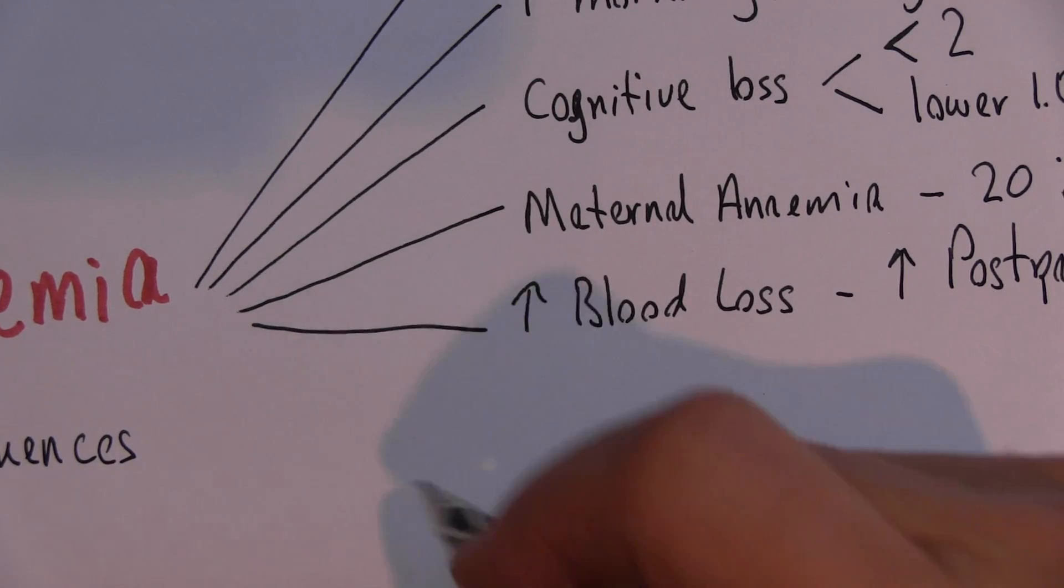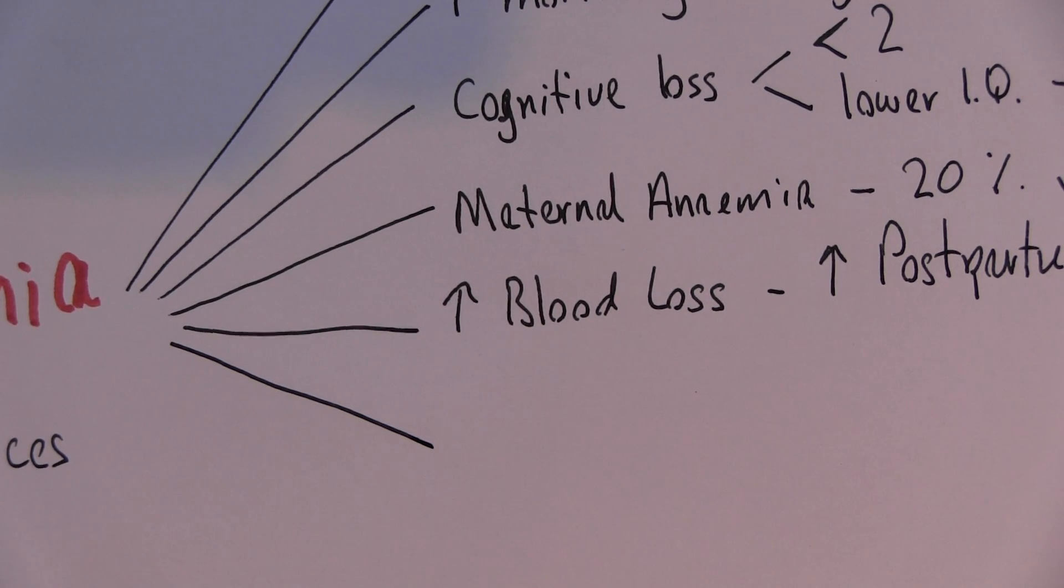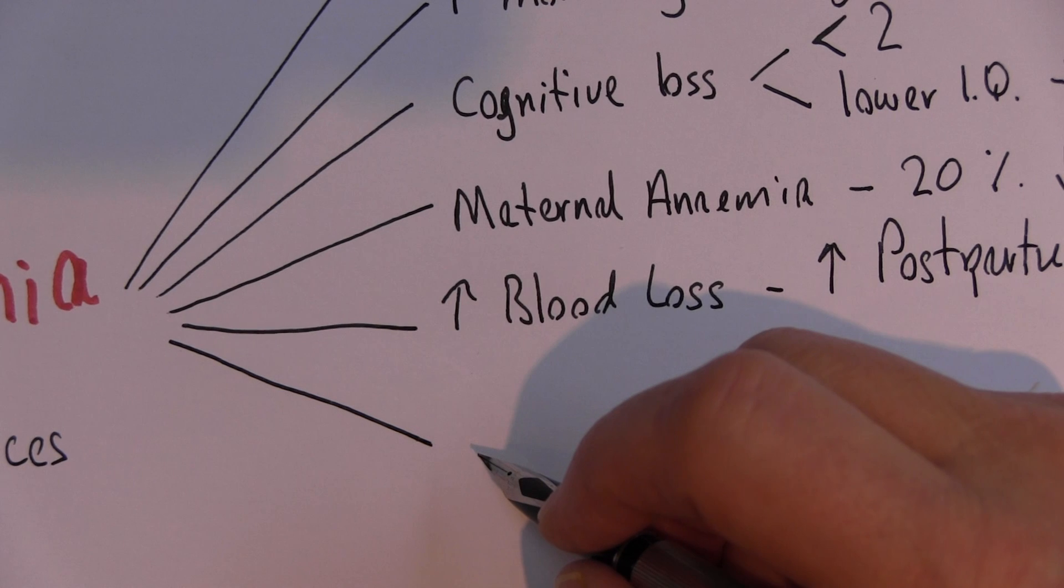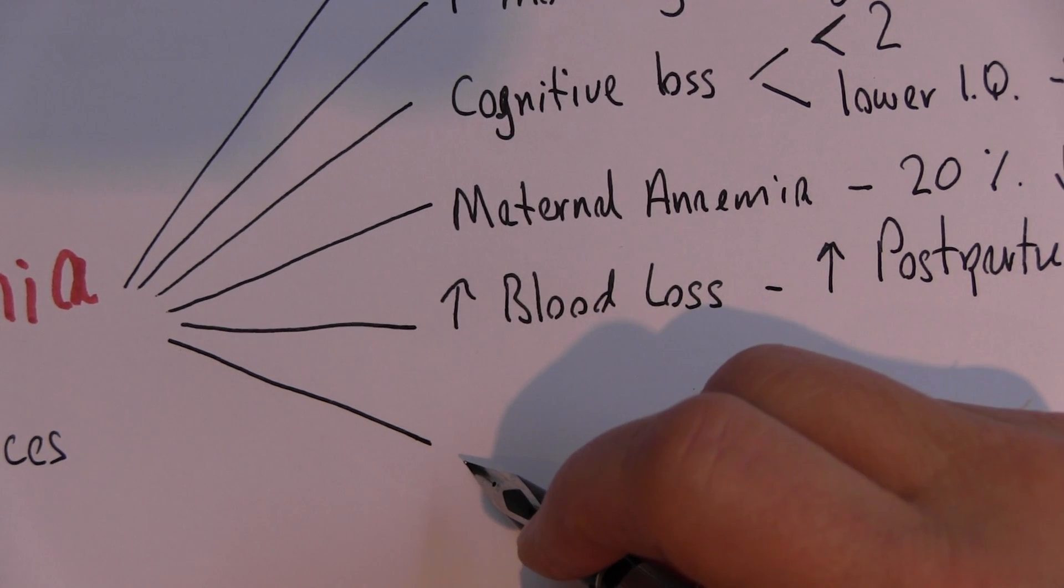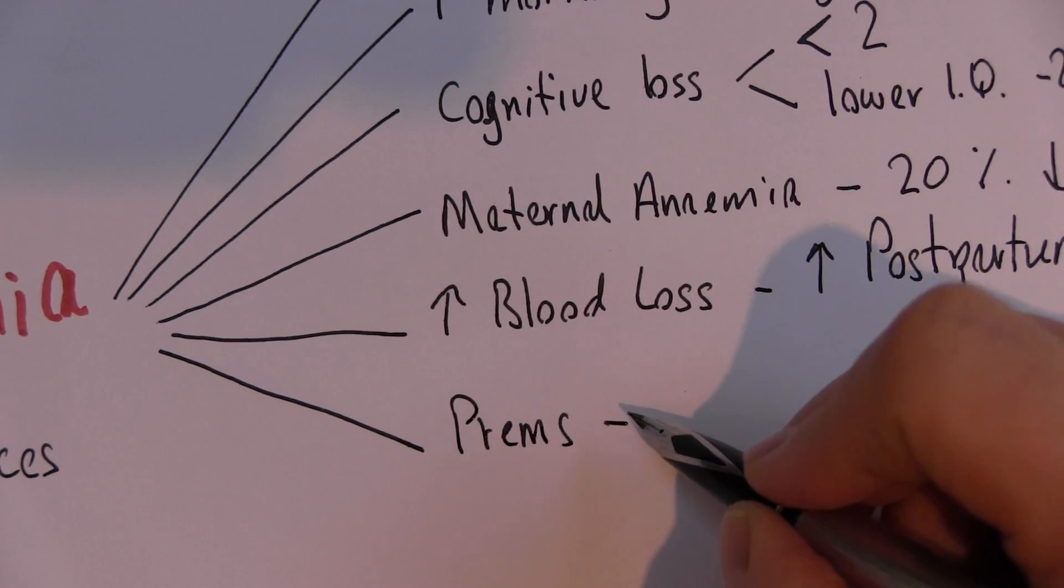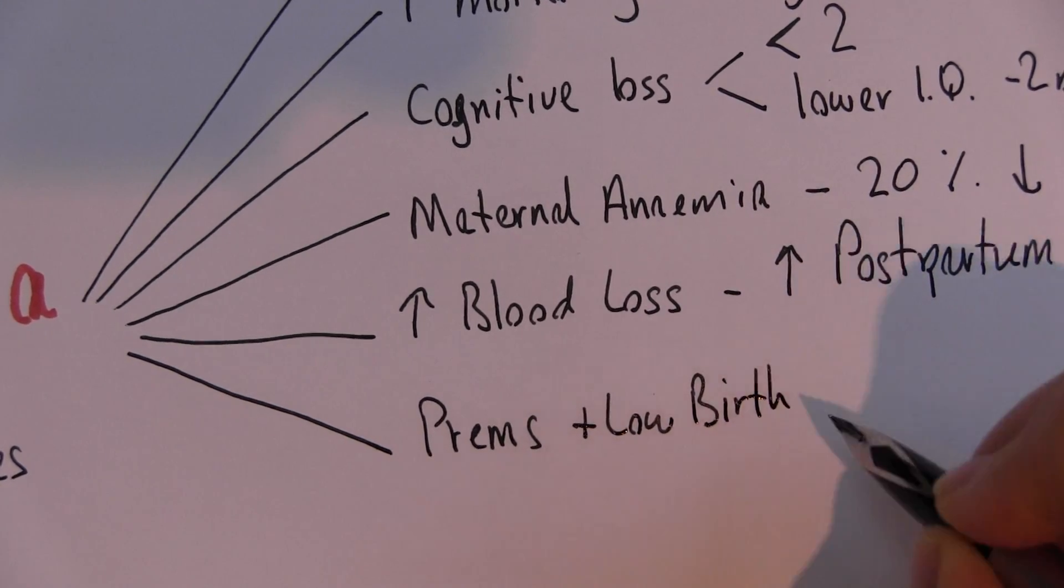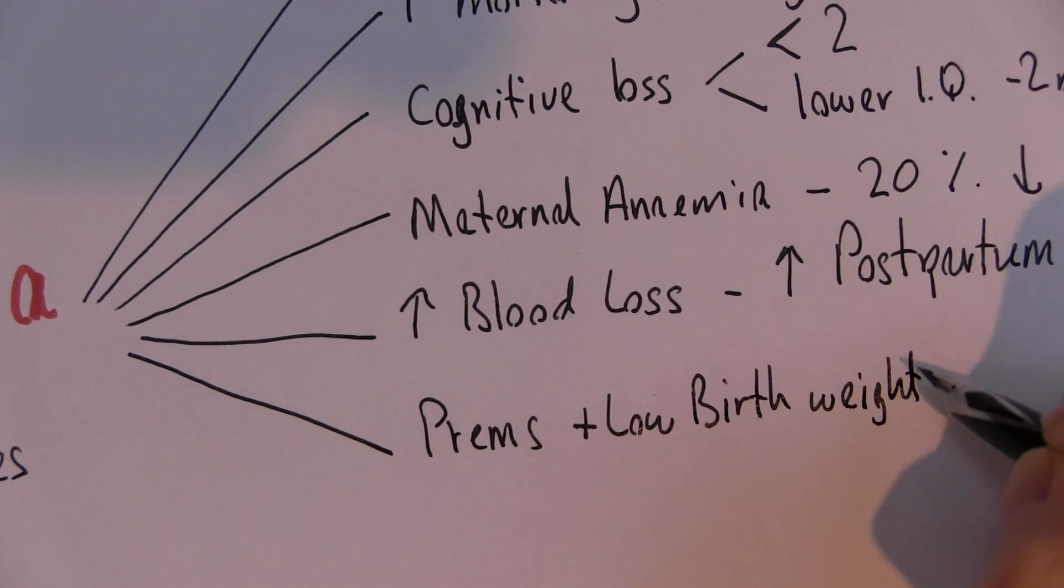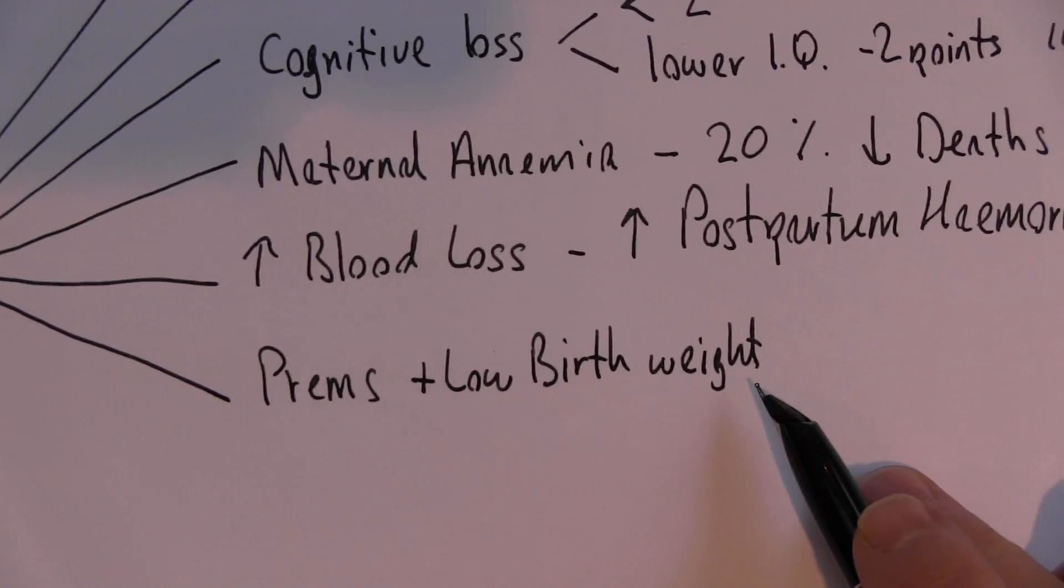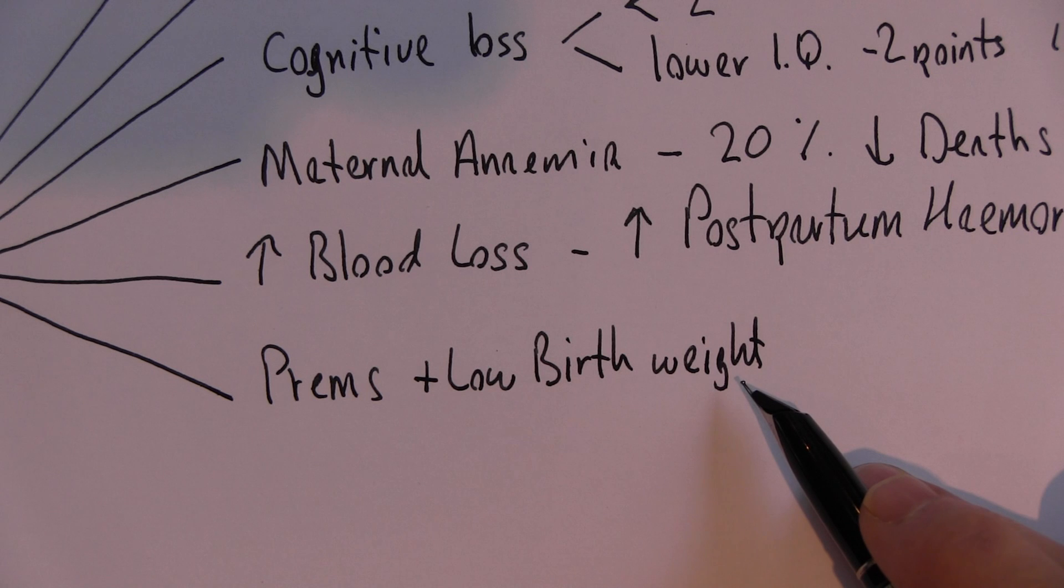Now another consequence of anemia is low birth weights - there's more premature babies and lower birth weights of children born to anemic mothers. So again, if we can treat the anemia in the pregnant mum, we'll get less premature births and we'll get less low birth weight babies.